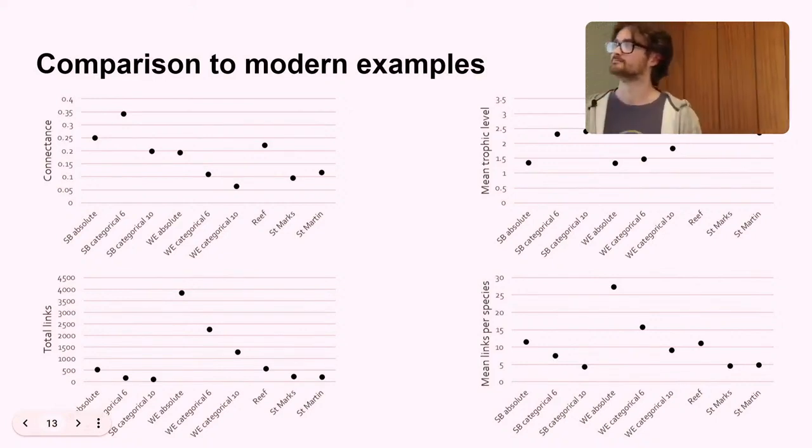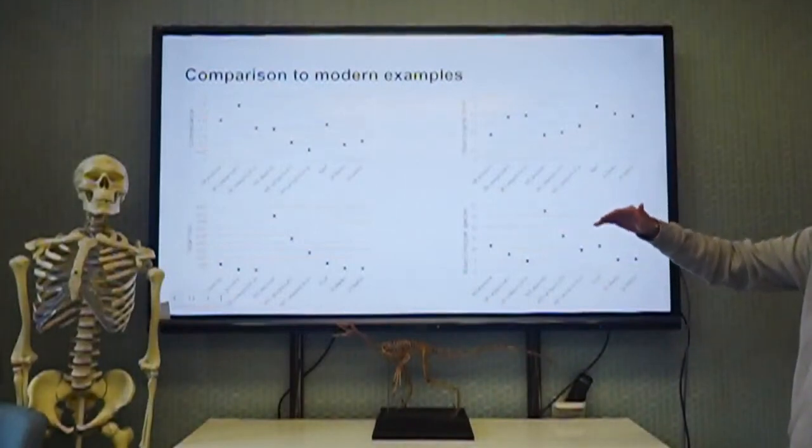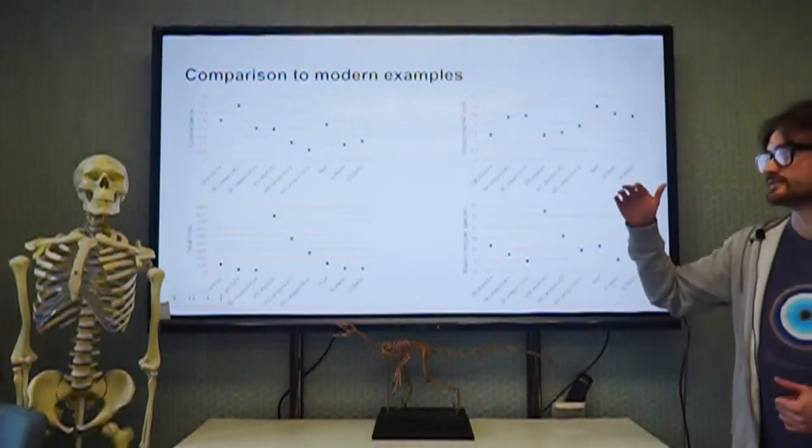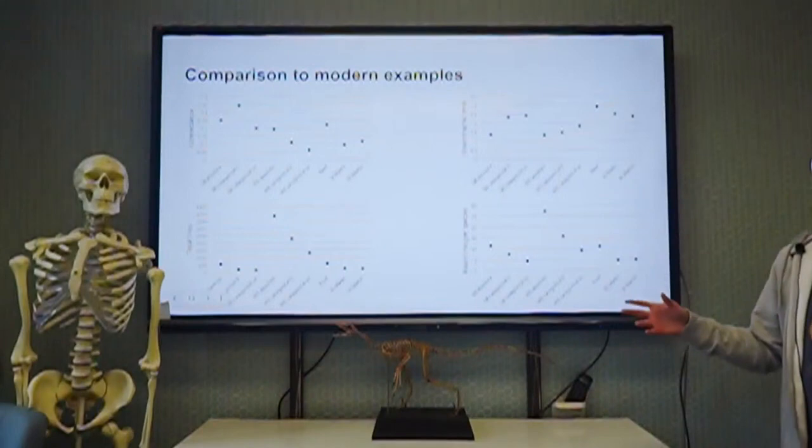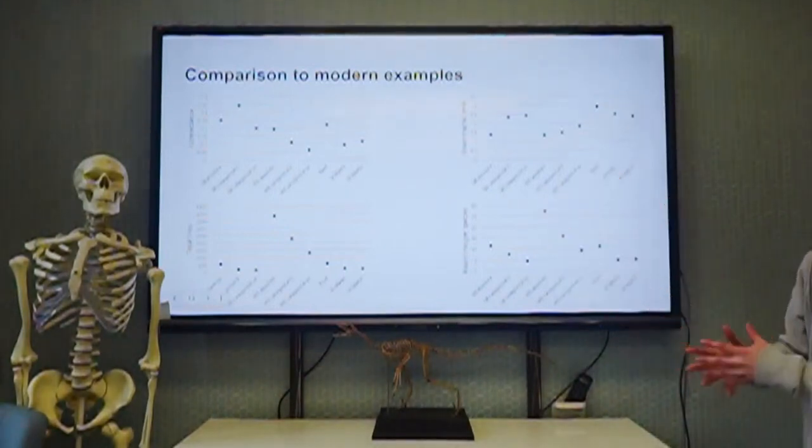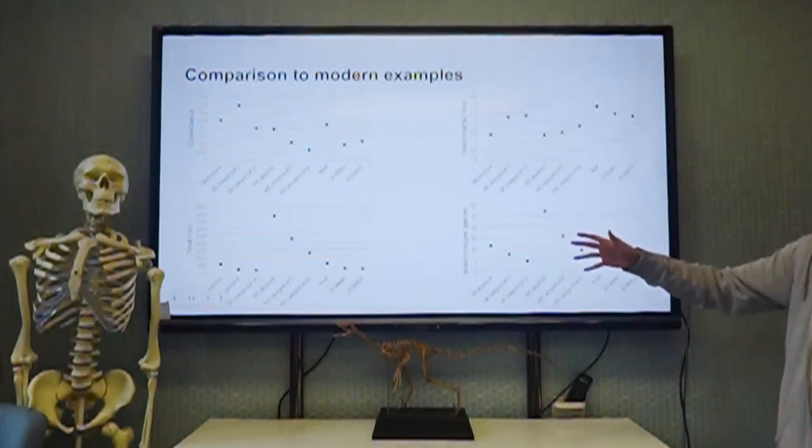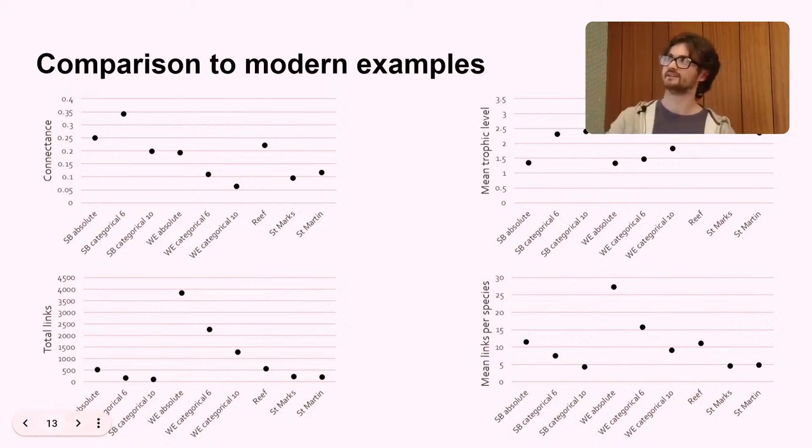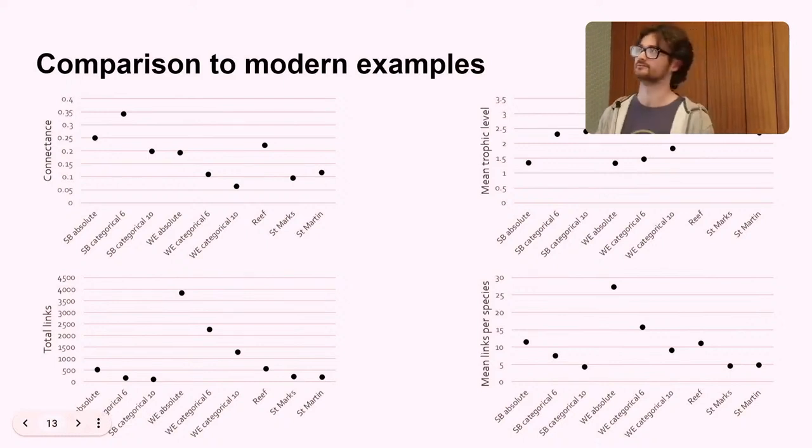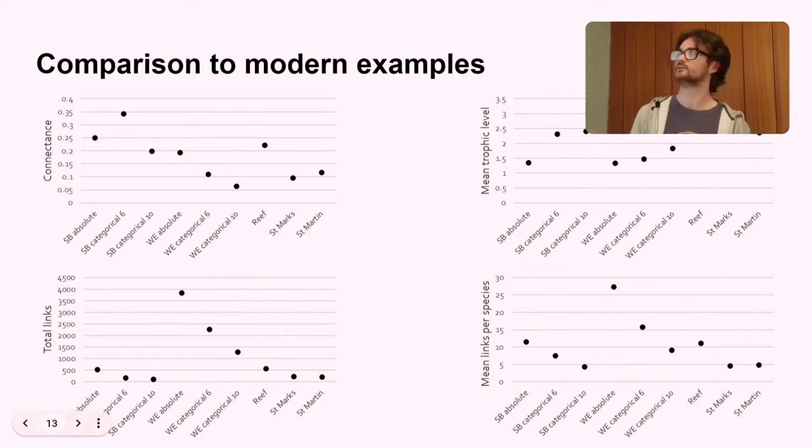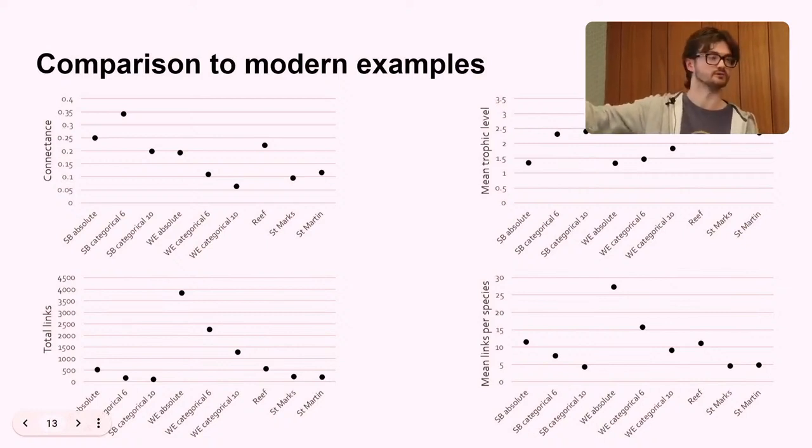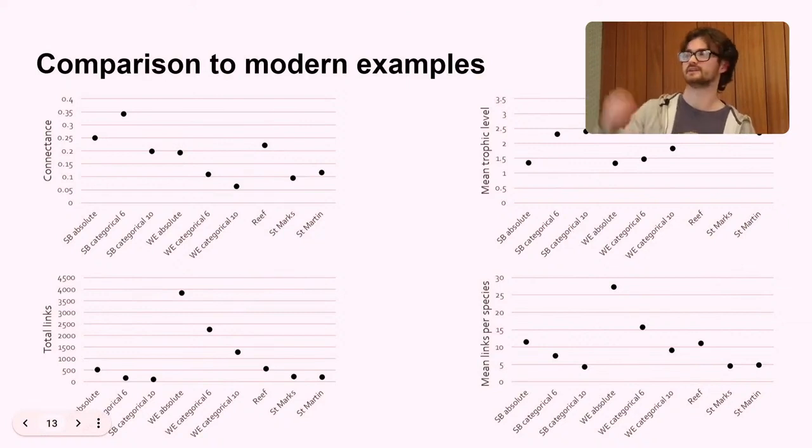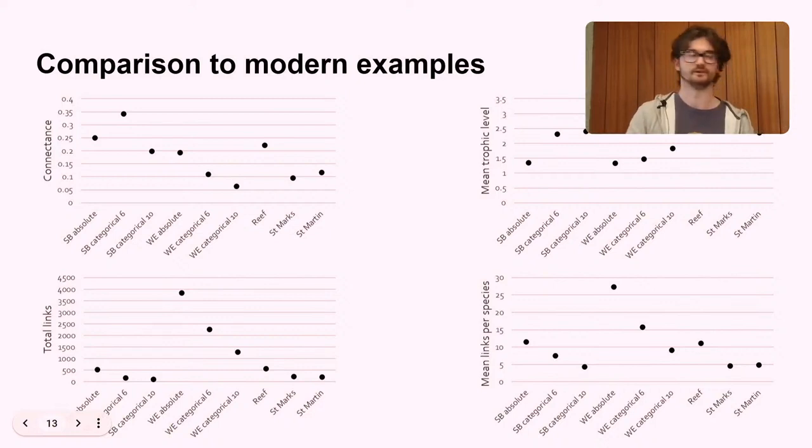So I'll just go through them a little bit. So for the strawberry bank webs, they tended to have a higher connectance than modern webs. And the Western Europe were actually pretty similar. But SB-C10, the strawberry bank web with the really restrictive size rules, that was the most similar to modern examples. Whereas WE-C10 was the least similar to modern examples. So when we were trying to figure out which size rule produces the most modern ecosystem structure, from that metric alone, we couldn't really tell which one was producing the more modern structure. But you would expect connectance to go down as the rules become more restrictive.